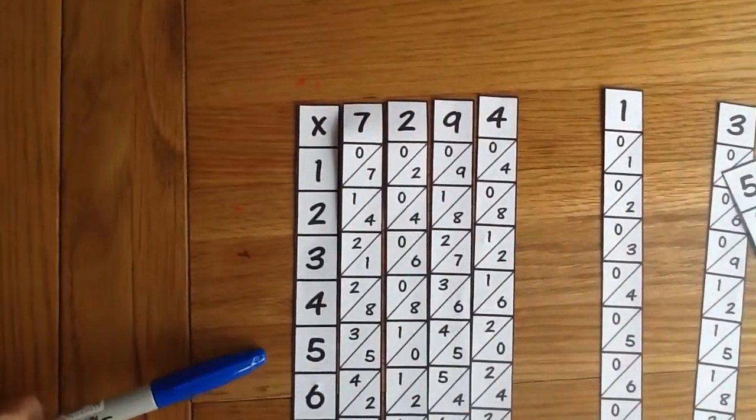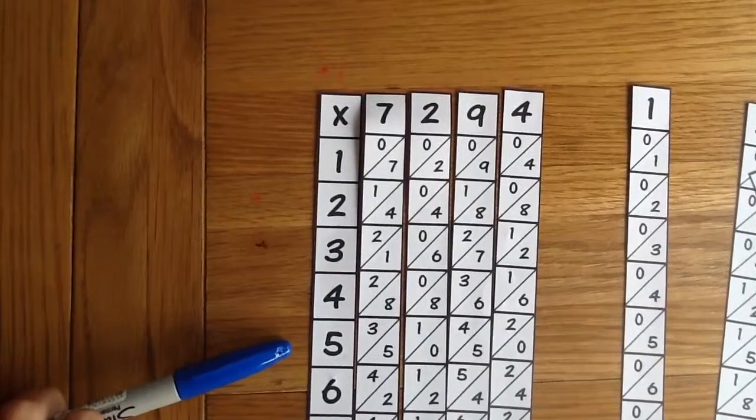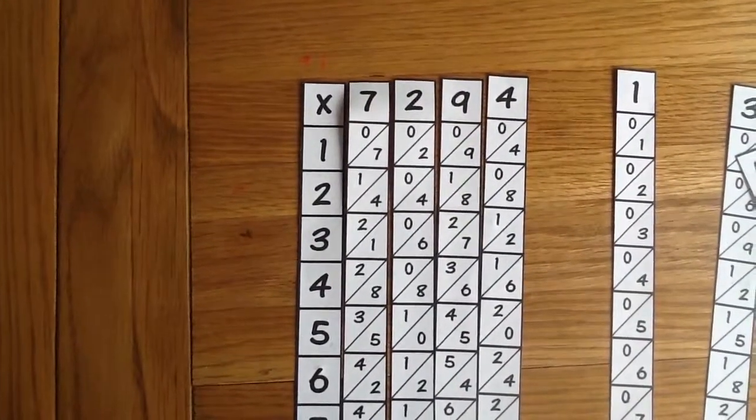So down the column into 5 you'll see that you've got 35, 10, 45, 20. Now the trick to this is to add up diagonally. So I'm going to start off.